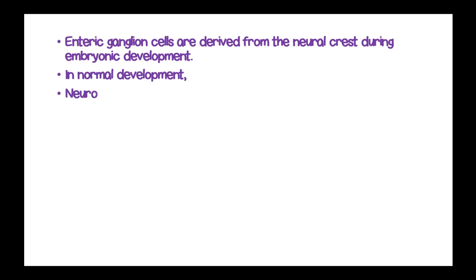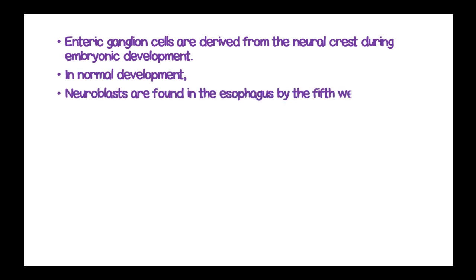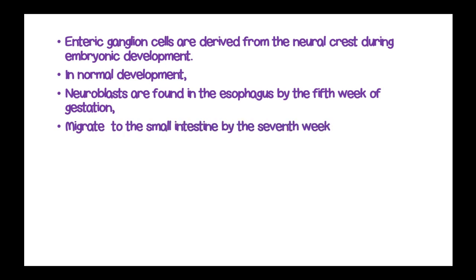Enteric ganglion cells are derived from the neural crest during embryonic development. In normal development, the neuroblasts are found in the esophagus by the fifth week of gestation, then they migrate to the small intestine by the seventh week, and they move to the colon by the twelfth week.